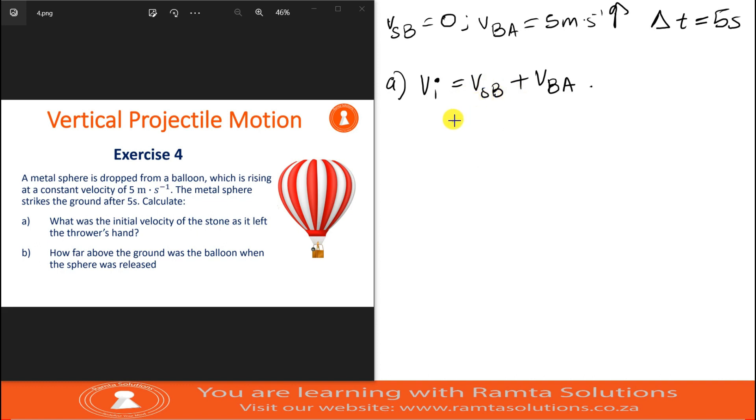So continuing, the velocity of the stone relative to the balloon was zero and the velocity of the balloon, if I say upwards is positive, the balloon is rising, so it's going up.